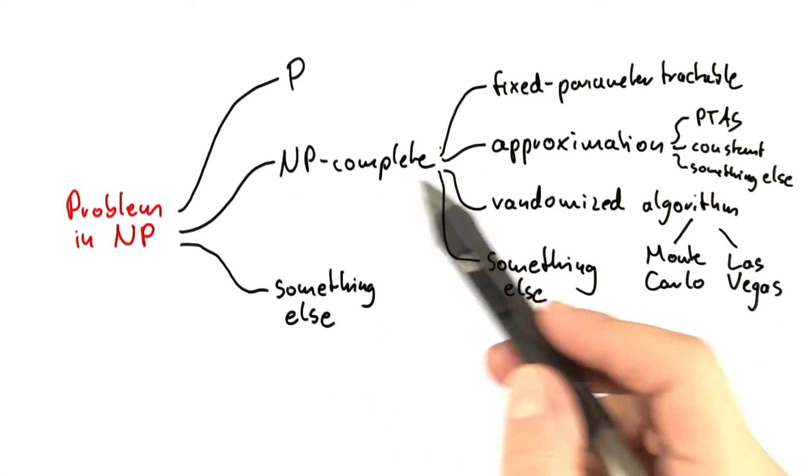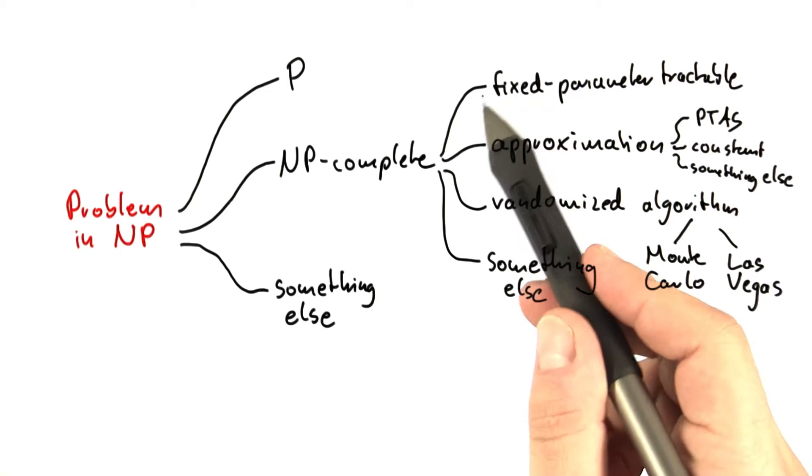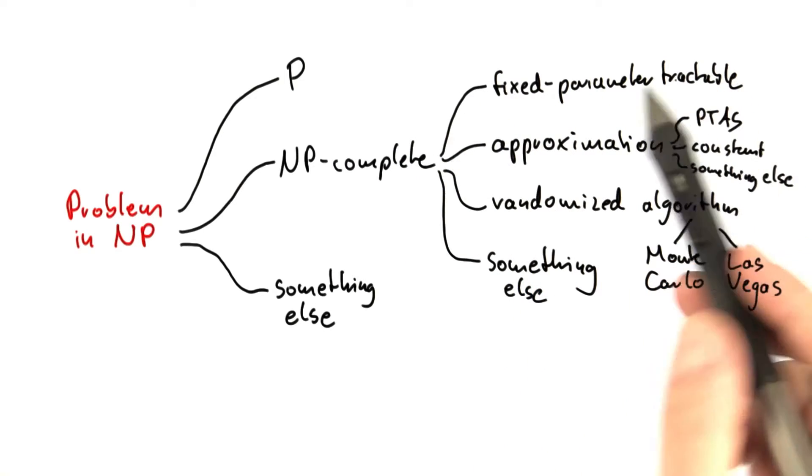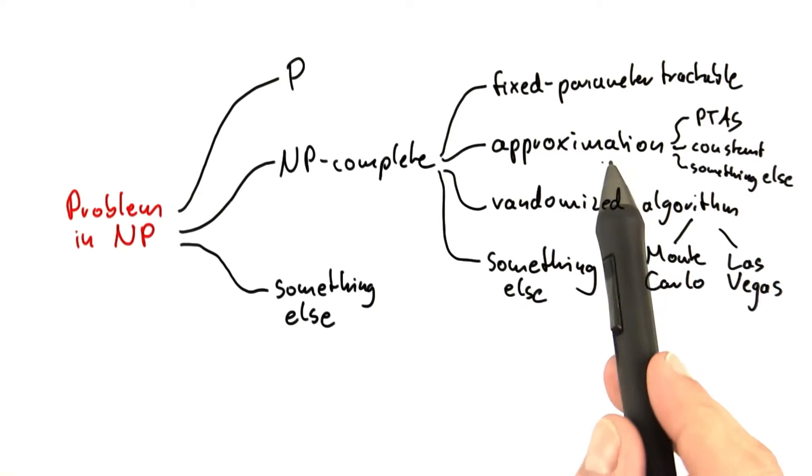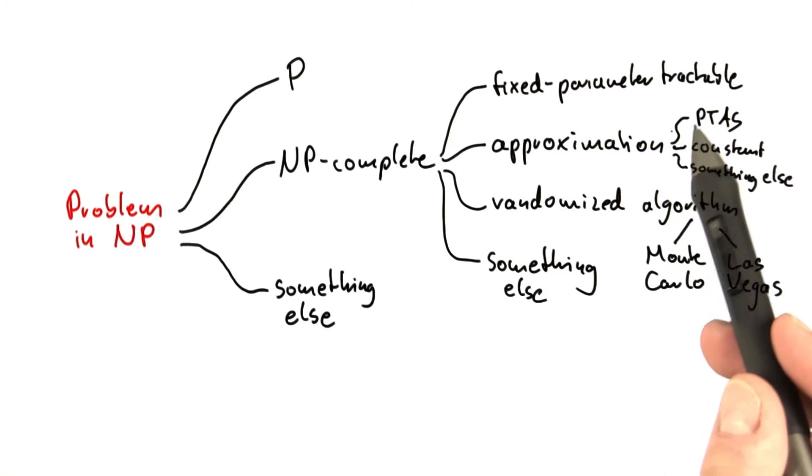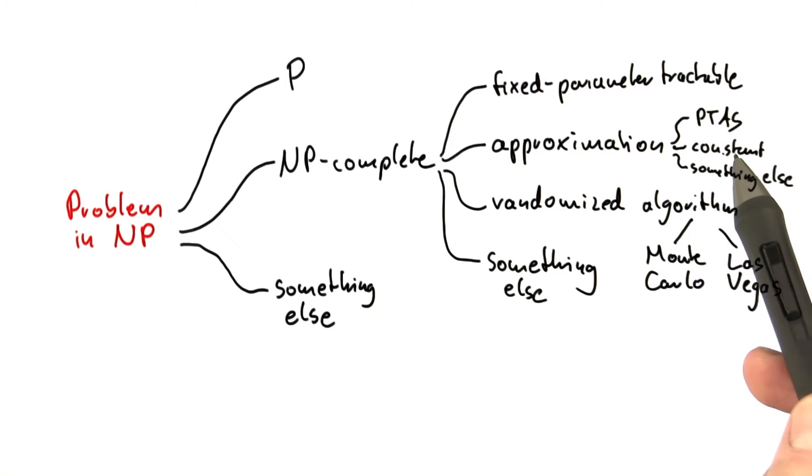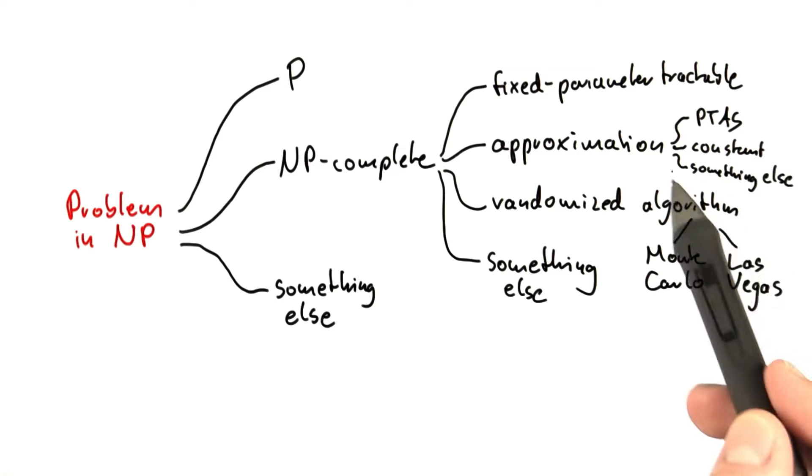Now, if your problem is NP complete, there are still very many possibilities. Your problem could be fixed parameter tractable. Your problem could have an approximation algorithm, and that approximation algorithm might either be a PTAS, a constant factor approximation algorithm, or also something else.